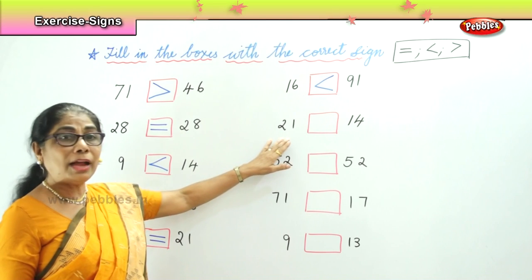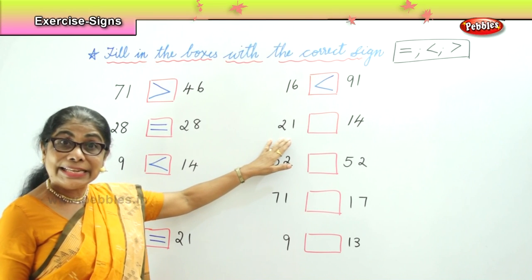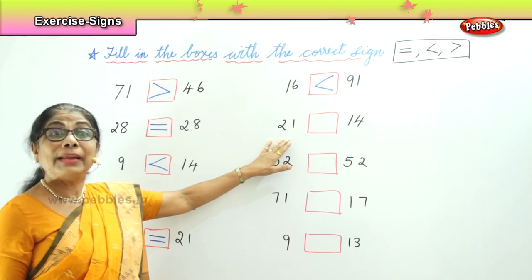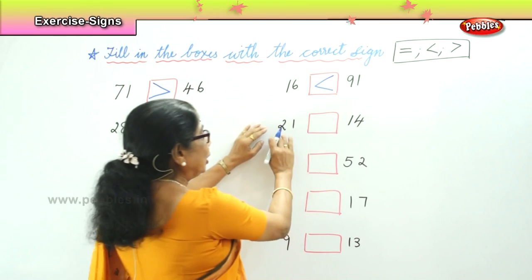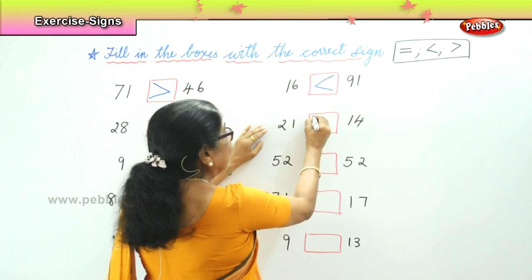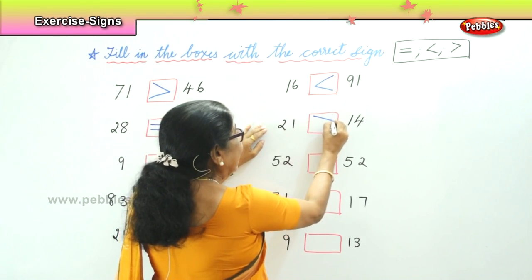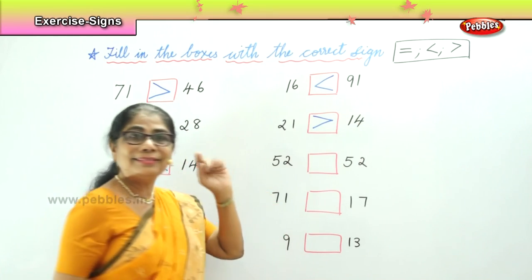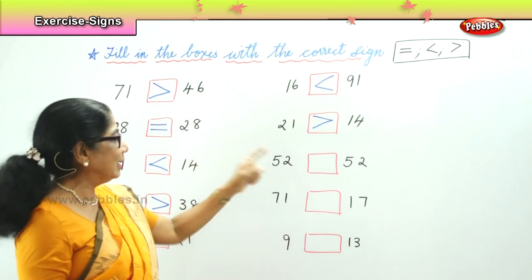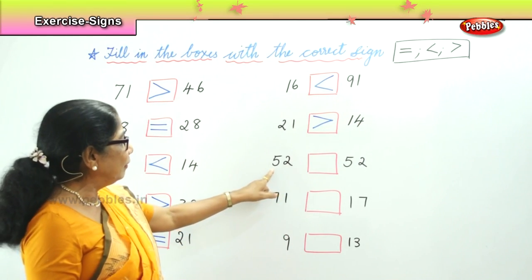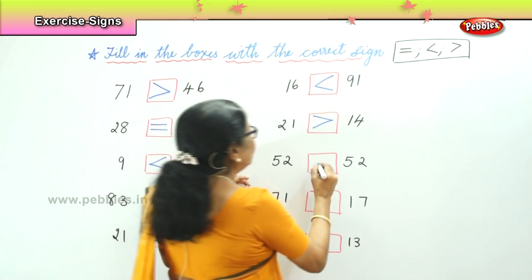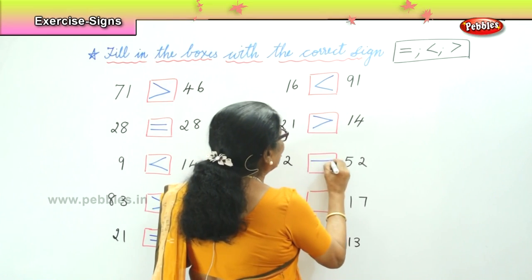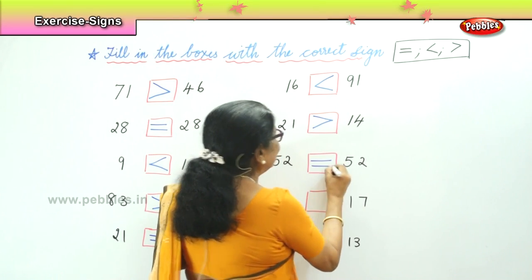21 and 14. 21 is greater than — bigger than 14. And here you have 52 and 52 — number 52 is equal to 52.